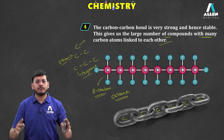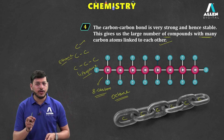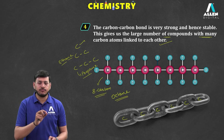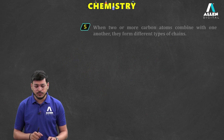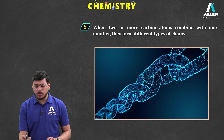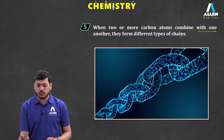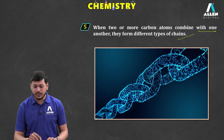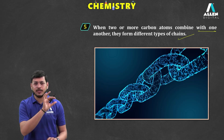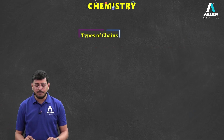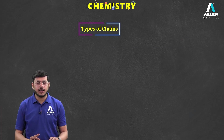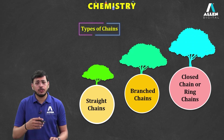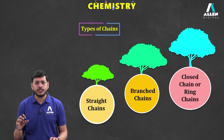In a straight chain, the carbon atoms are all connected in a straight, linear manner. In a branch chain, a branch is attached to the straight chain — just like a tree has a trunk with different branches coming out from it. Similarly, carbon chains can have different branches attached to the main chain, making them different compounds.